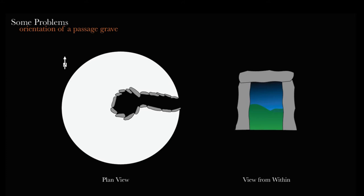Here's a plan view and a hypothetical view from within. Passage graves are often mentioned as being the simplest case of orientation. Stone circles have so many stones and therefore many potential alignments, but this type of structure seems to focus attention in one specific direction—the direction of the passage or corridor. You might think this is very easy to measure.